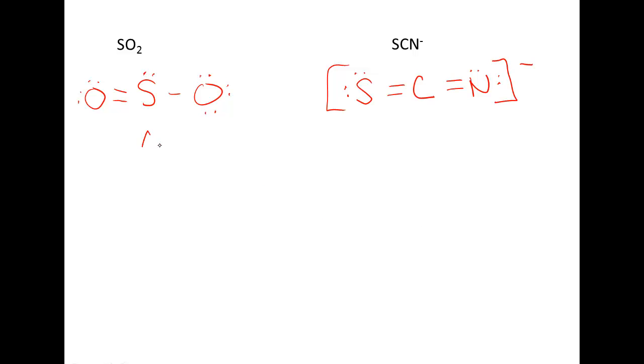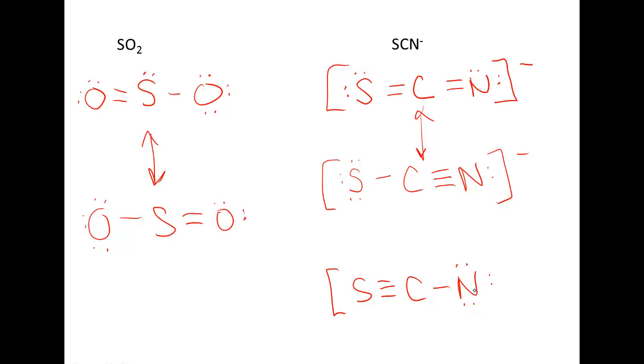So SO2 has one resonance structure, and that is if we move the double bond to the right side. SCN minus, as you already know, has three structures, and we actually drew those before. It doesn't matter what order you put them in, so I'm going to put my triple bond for N and my single bond for S, and then we just put double arrow in between them to show resonance. And now I'm going to do my triple bond with SNC and a single bond for N and double arrow. So these are the resonance structures for SO2 and SCN minus.